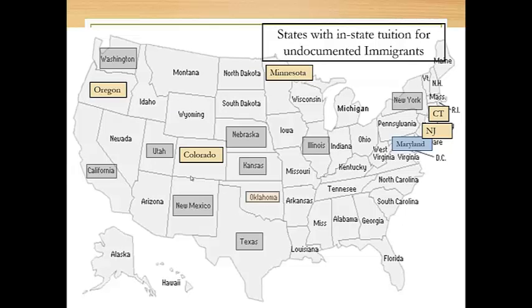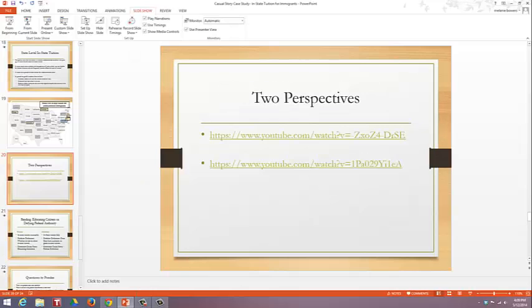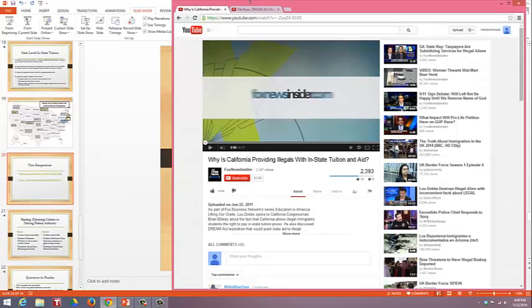There are two different perspectives on whether or not we should pass state immigration in-state tuition legislation. The first video is from Fox News — a more conservative perspective making the causal story case for why we should not provide illegal immigrant children with in-state tuition in California.